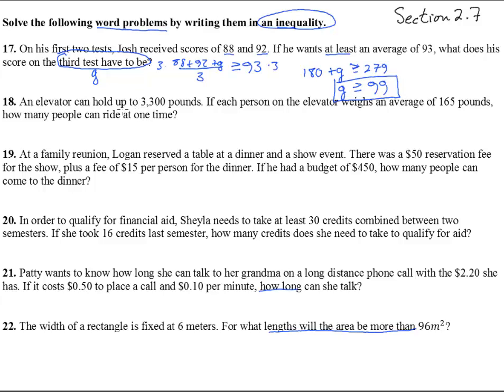An elevator can hold up to 3,300 pounds. So if we take the number of people, let's say that's P, and they're at an average of 165 pounds apiece, it can be up to, which means less than or equal to, 3,300. We now have an inequality that we can solve. Divide by 165, divide by 165, and we have that P can be less than or equal to 20. It makes sense that we can have up to 20 people ride. If we had equal to 20, then we'd have to have 20 people on the elevator every time, and that's just kind of silly.